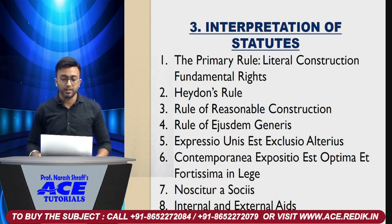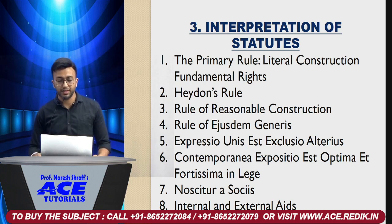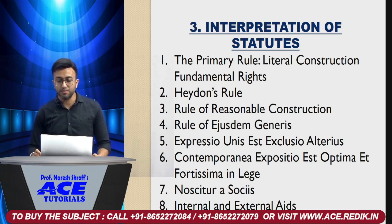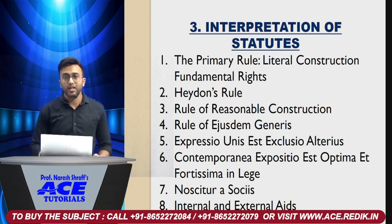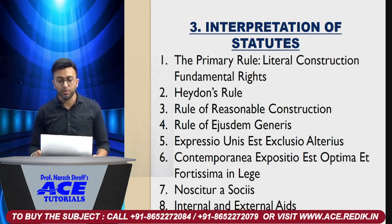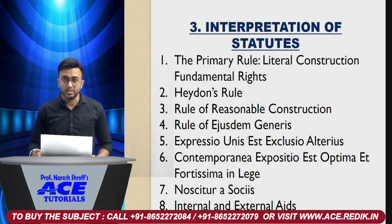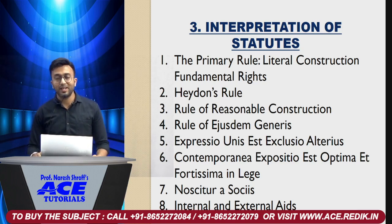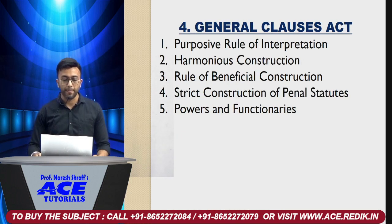The third chapter is Interpretation of Statutes. In that you will see: literal construction, hidden rule, rule of reasonable construction, rule of just and generous construction, and the maxims Expressio Unius Exclusio Alterius. The maxims from questions 5, 6, and 7 are very good, because in the exam there will be maxims written. The language is confusing, so remember the maxims and their meanings. The last question covers internal and external aids — that will be good.